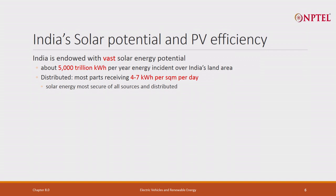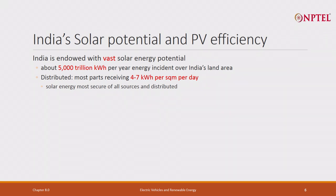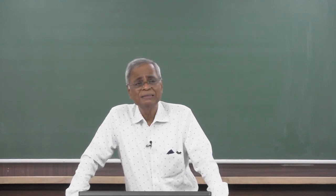Looking at India — India is a vast country with vast solar energy potential. About 5000 trillion kilowatt hours per year of energy is incident on India's land area. Even at 20 percent efficiency, that is 1000 trillion kilowatt hours. This energy is distributed throughout the country — not concentrated — available in urban, rural, and every area. You get 4 to 7 kilowatt hours per square meter per day: 4 on cloudy days, 7 when there is really good sunshine. Solar is the most secure energy source — the sun will always be there.